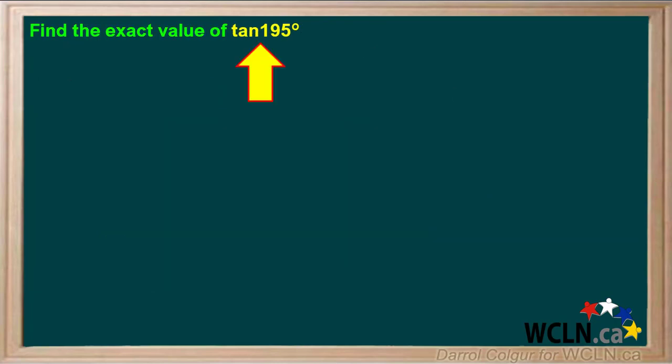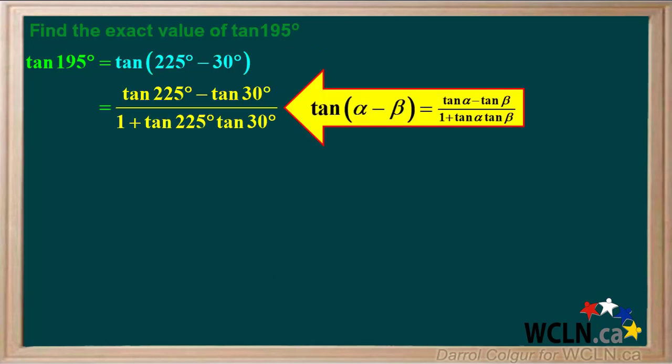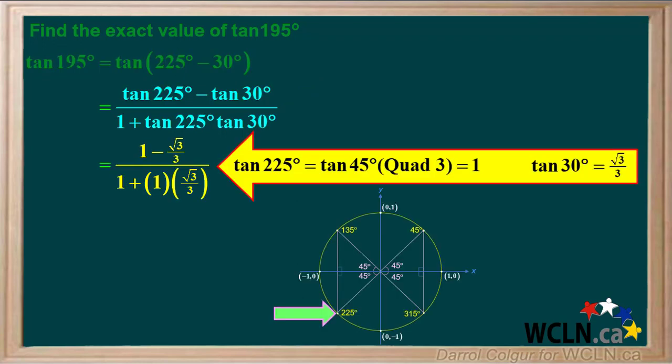Let's do another example. We're asked to find the tangent of 195 degrees. 195 is the same as 225 minus 30. We know the exact values for the tangent of 225 degrees and the tangent of 30 degrees. We'll use the identity tan(α − β) = (tan α − tan β) / (1 + tan α tan β), giving us (tan 225° − tan 30°) / (1 + tan 225° · tan 30°). tan 225° is the same as the tangent of 45° in quadrant 3 where the tangent is positive, so tan 225° = 1.